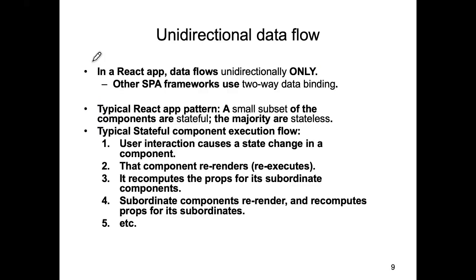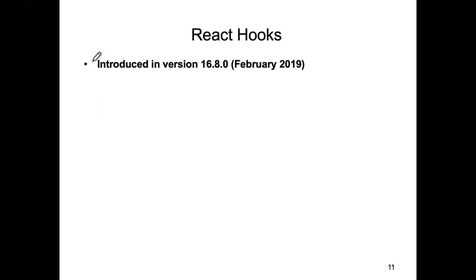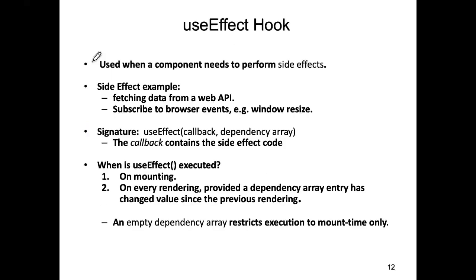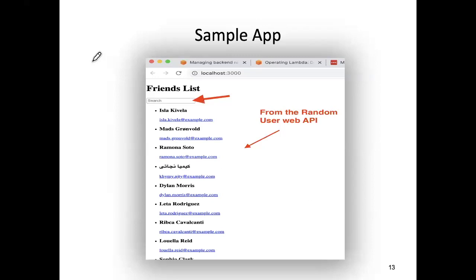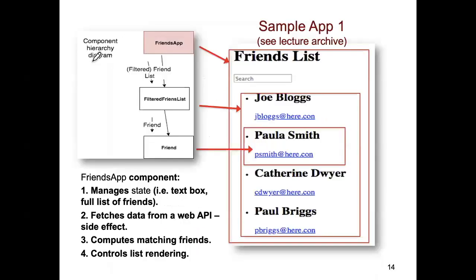We were looking at this app that retrieves 10 user profiles from the random user web API. It had a text box for user input, and whenever the user typed into the text box, we wanted the list of user profiles to be filtered on that basis. This was the design, and we need to understand how the top component plays a key role in the running of the app.